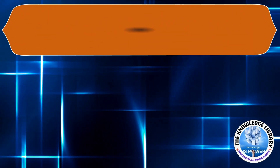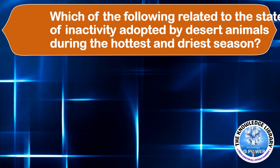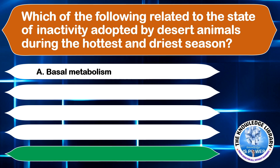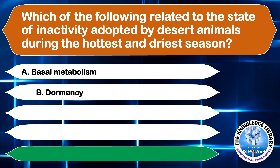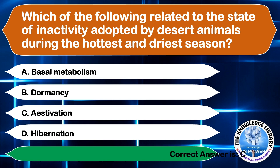Which of the following is related to the state of inactivity adopted by desert animals during the hottest and driest season? A. Basal Metabolism, B. Dormancy, C. Estivation, or D. Hibernation. The correct answer is option C, Estivation.